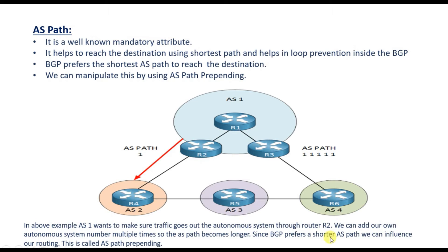For example, if AS1 has three routers and we want all traffic to exit through router R2, we can prepend the AS path multiple times on router R3 so that its path becomes longer. Since BGP prefers the shortest AS path, traffic will prefer R2. We can also add our own autonomous system number multiple times to make the path longer and influence routing. This technique is called AS path prepending.